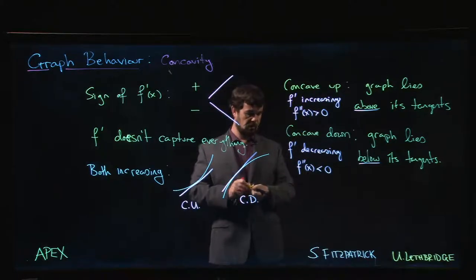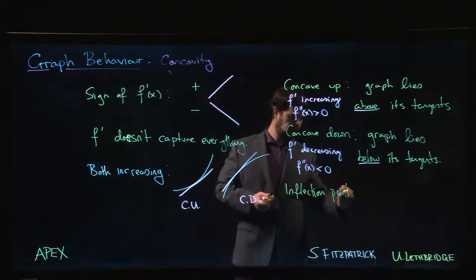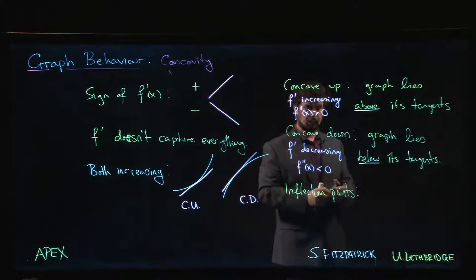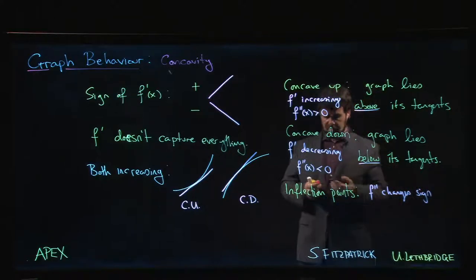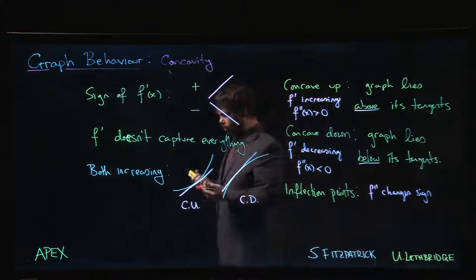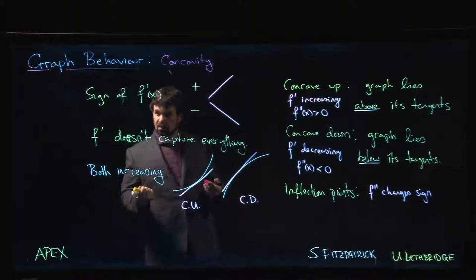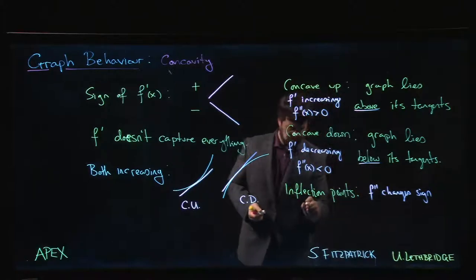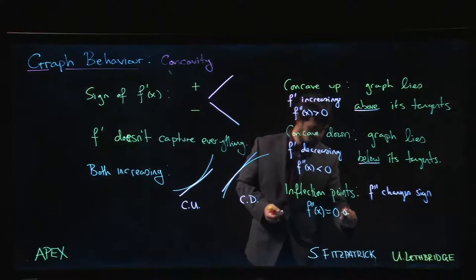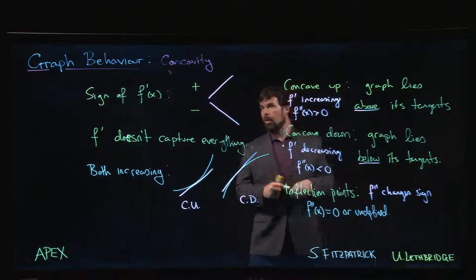Also of interest are the points at which we transition from being concave up to concave down — these are called inflection points. Inflection points are the points where f double prime changes its sign, from positive to negative or from negative to positive. As long as the second derivative is continuous, the intermediate value theorem tells us this must happen at a zero of f double prime, or possibly a place where the derivative is undefined.